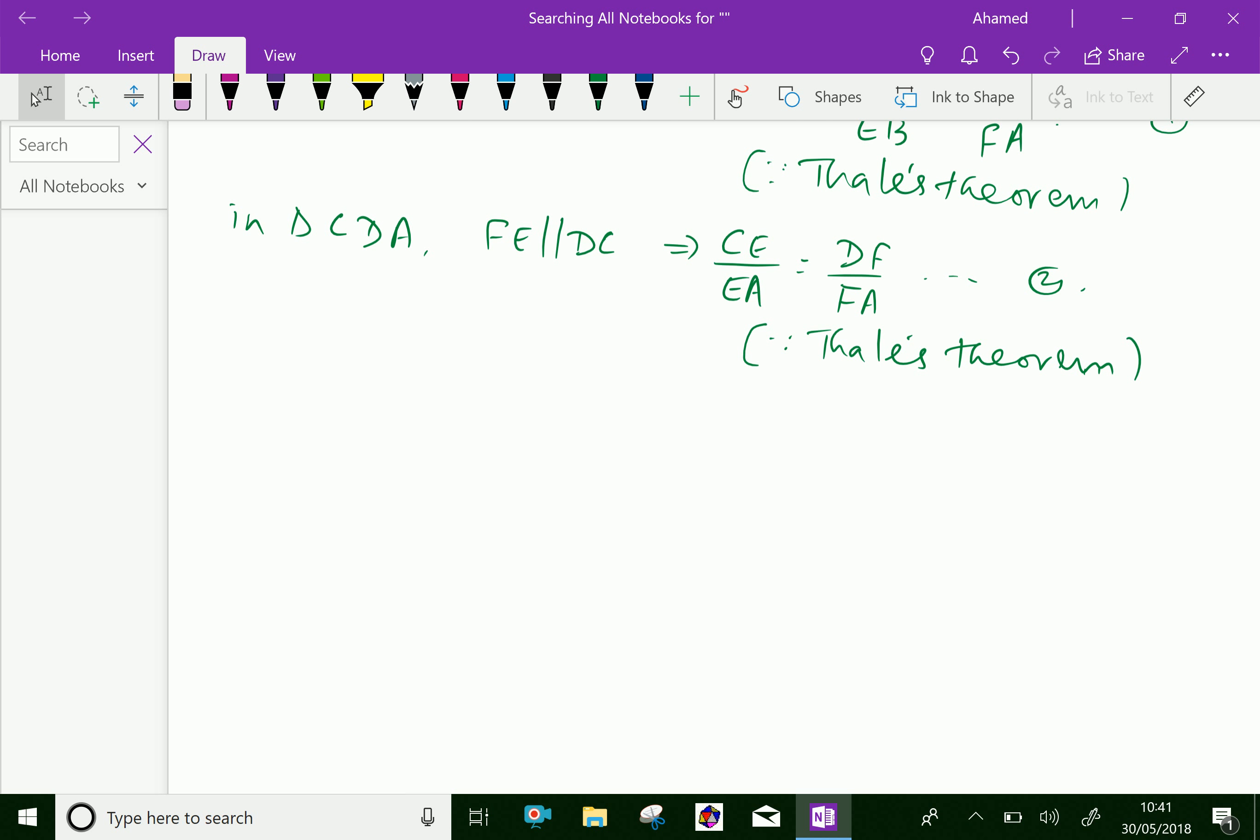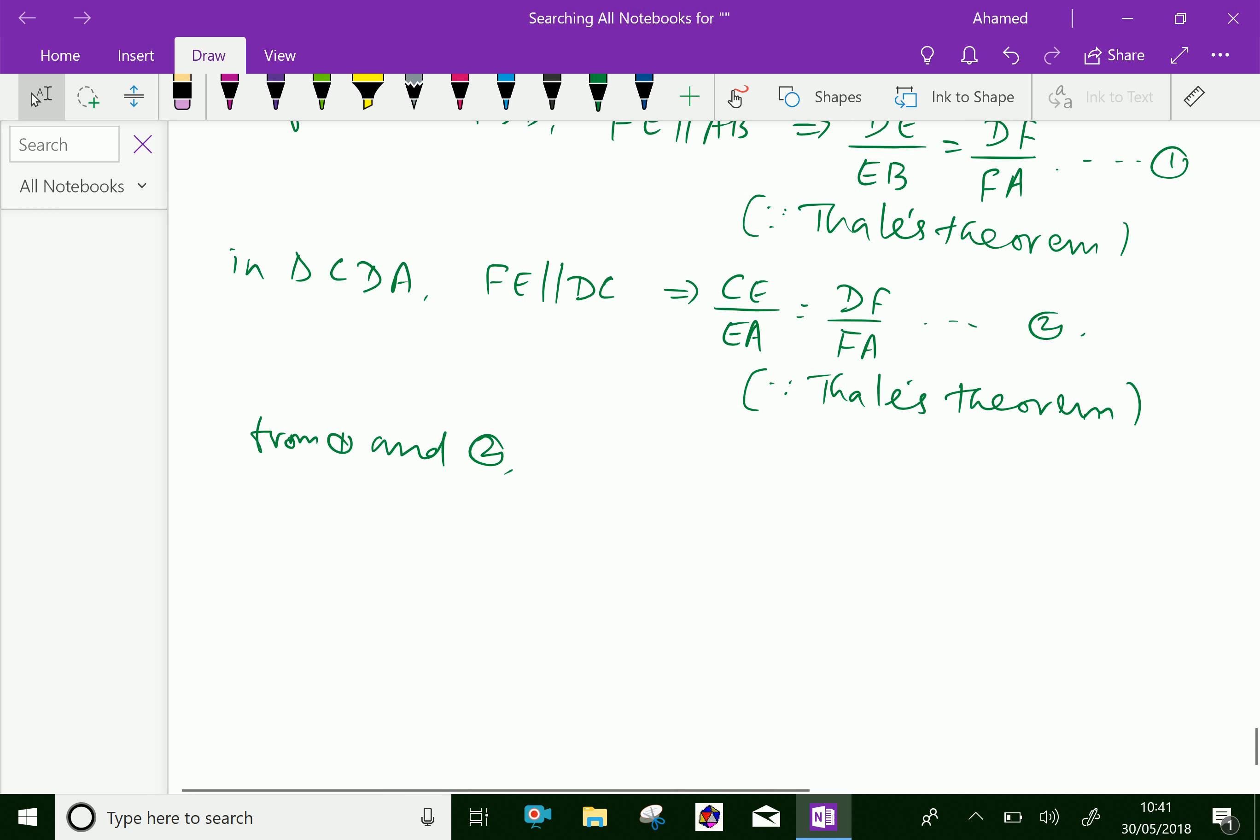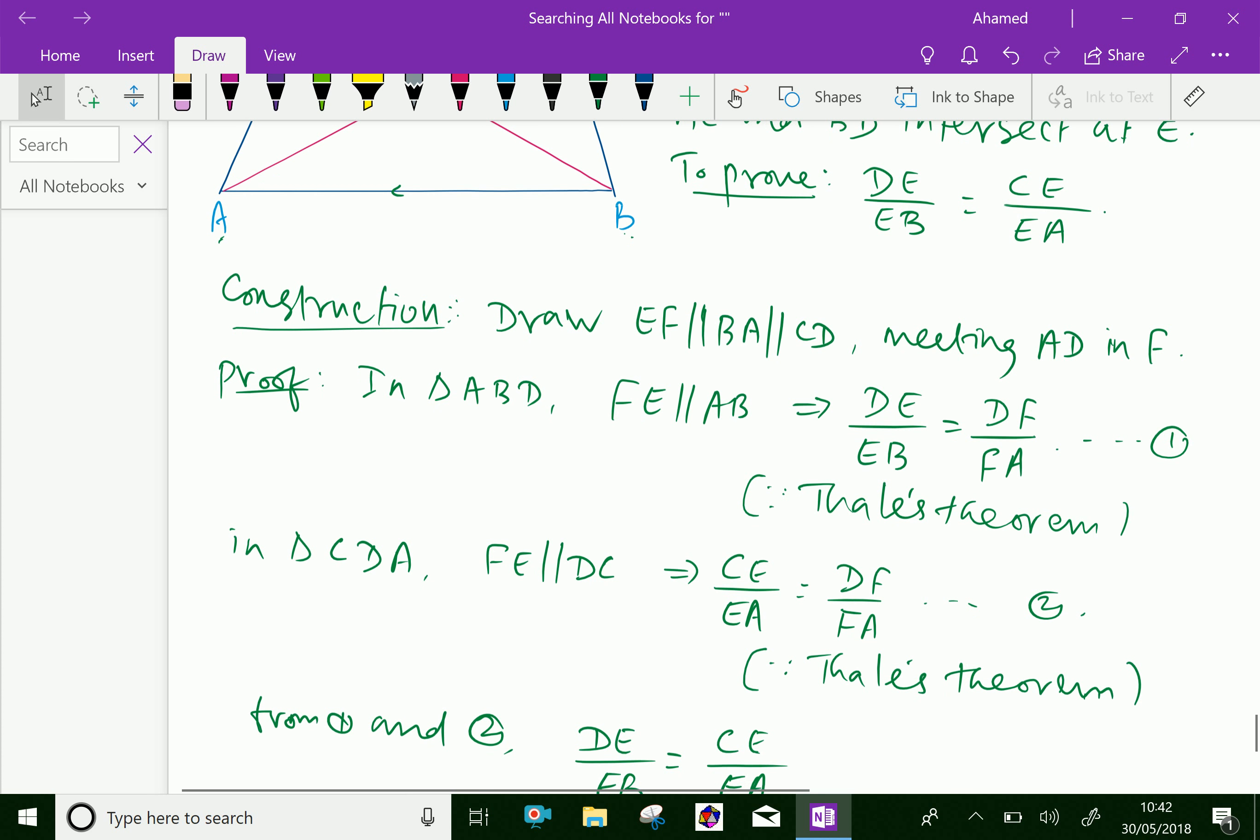From equations 1 and 2, we will get the result. Equation 1 says DE over EB equals DF over FA. Equation 2 says CE over EA equals DF over FA. Equating both, we get DE over EB equals CE over EA. So we arrive at the result.